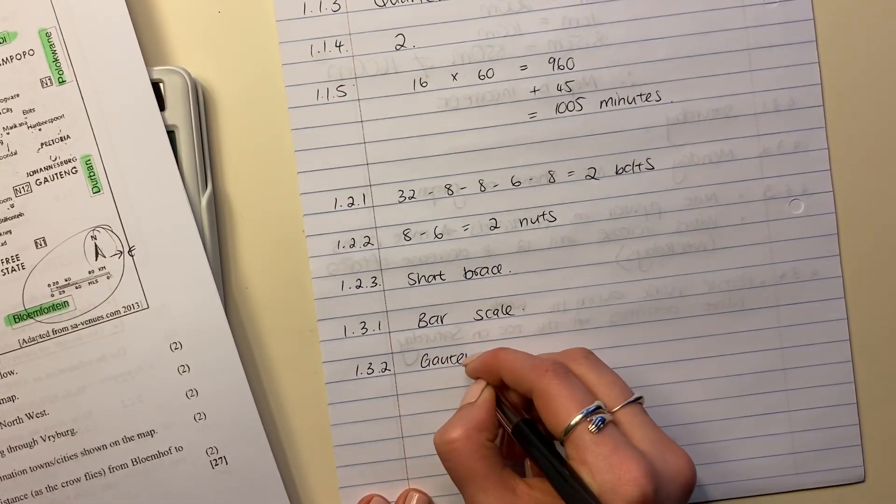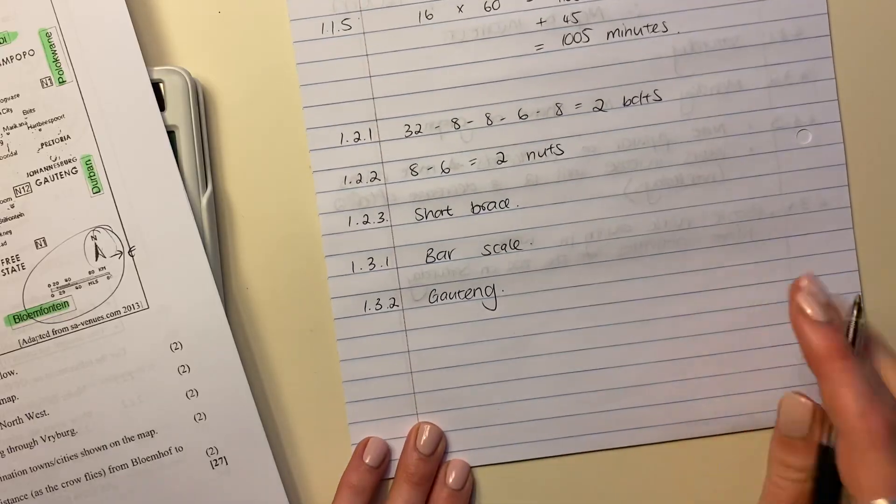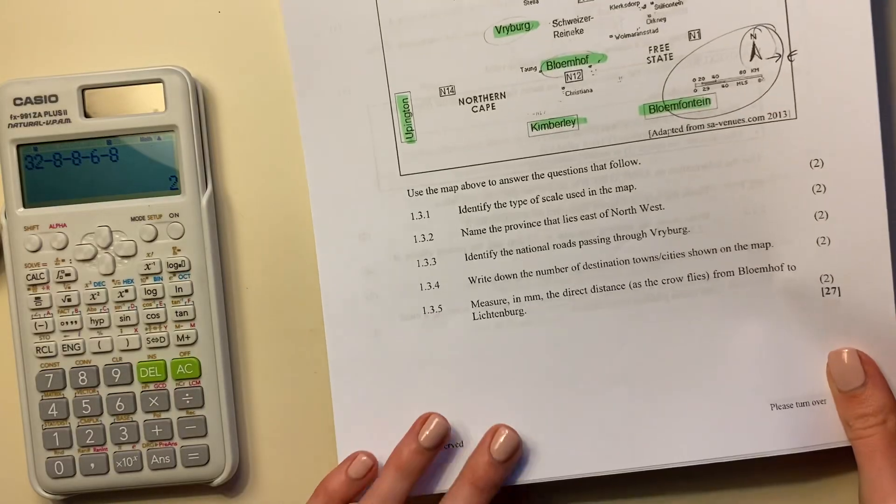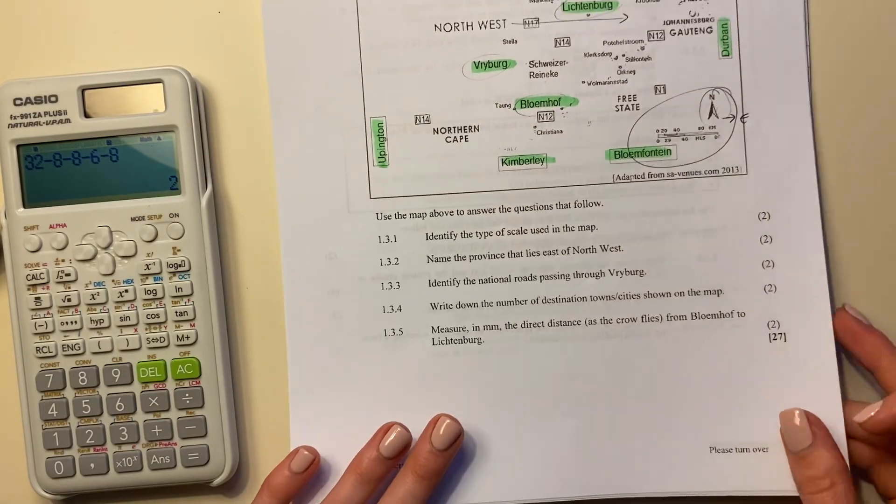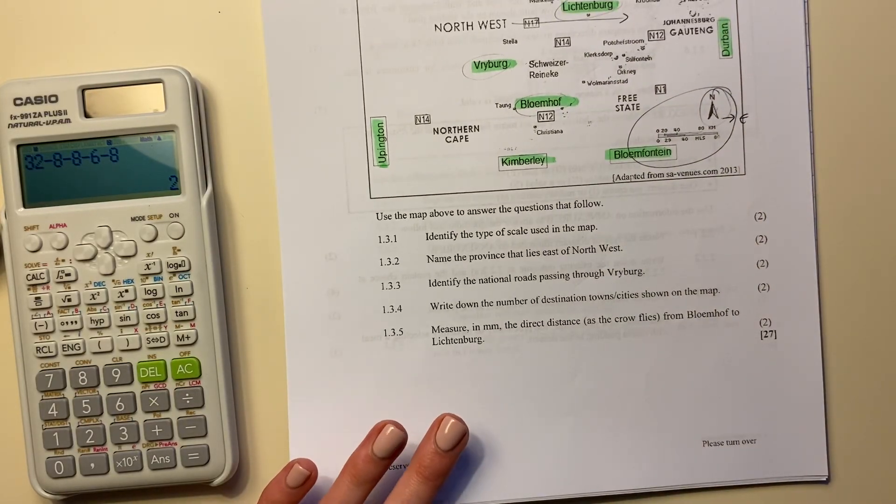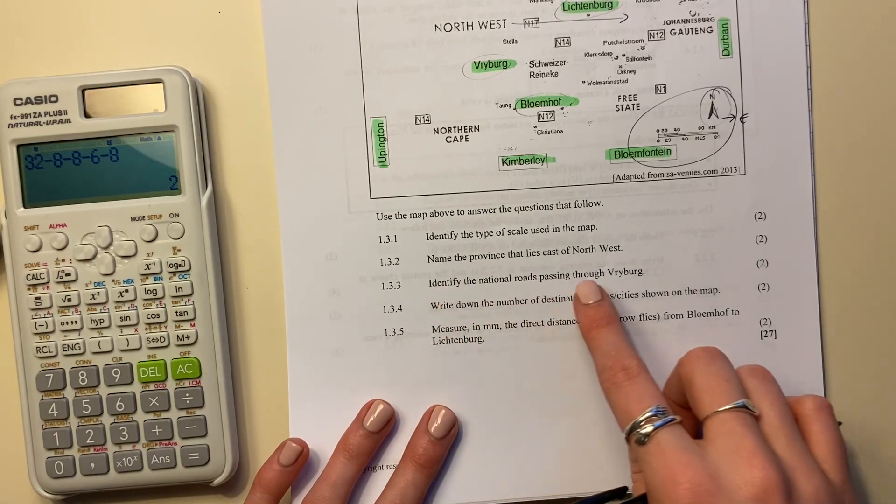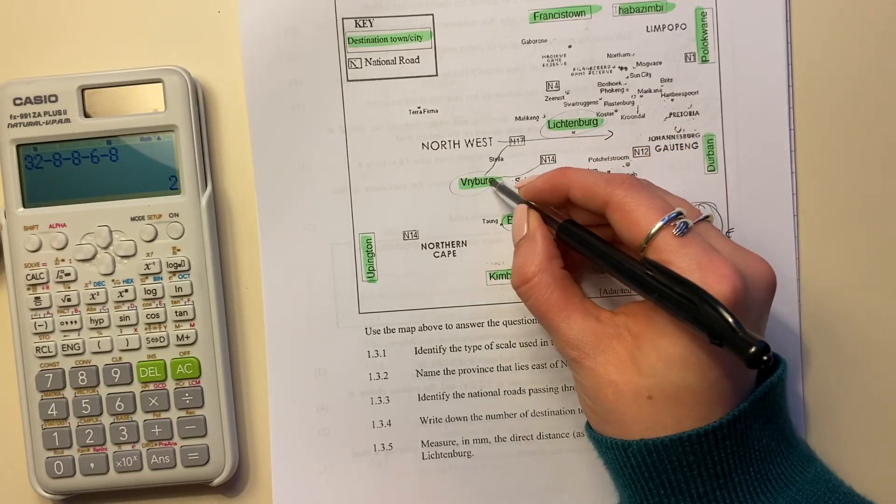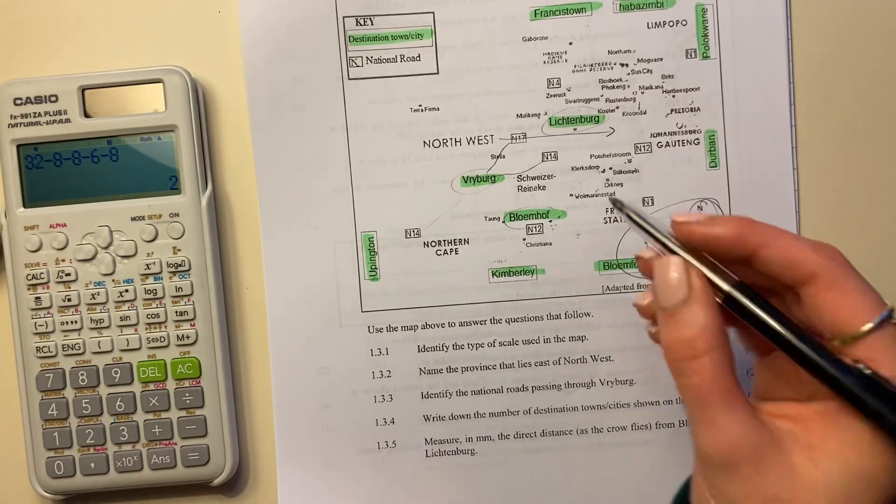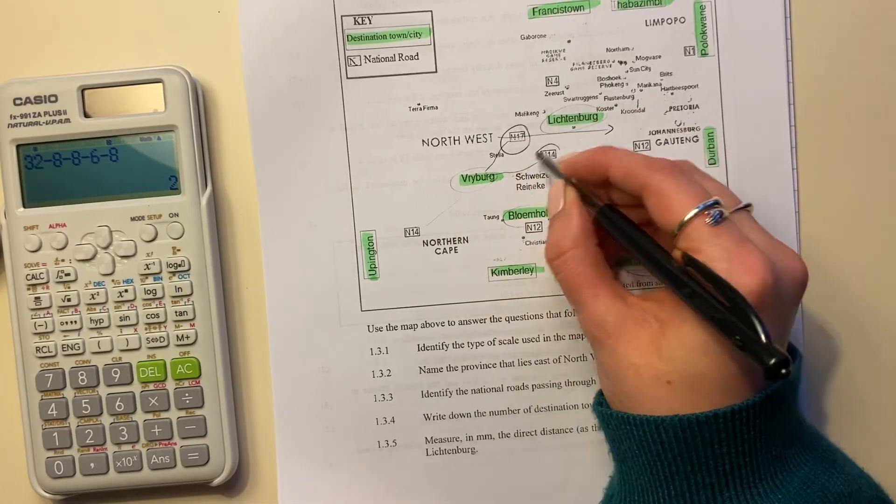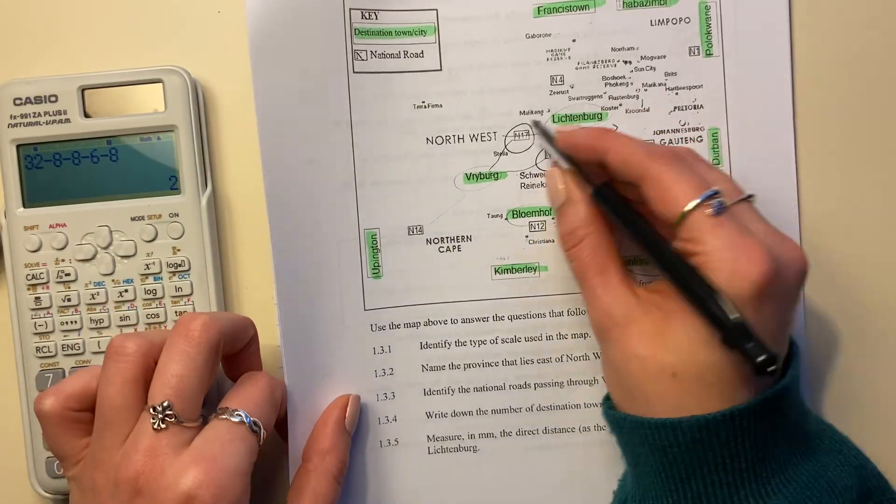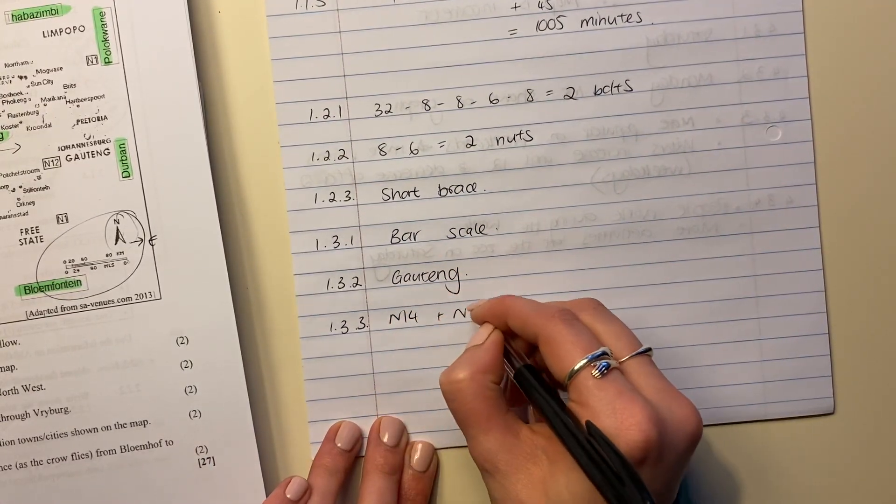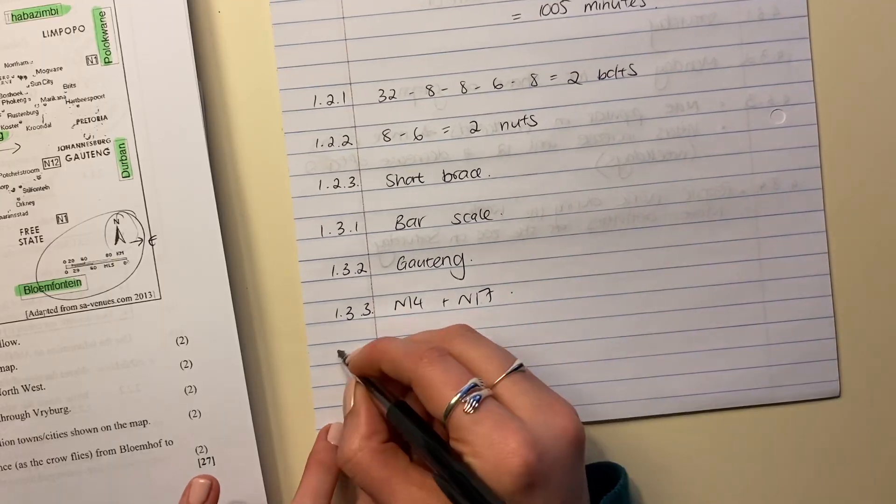Obviously, when you get your paper, guys, you will be getting paper that is in color and will be much better printed than my nasty printer. So don't stress if you can't see much on this map, Mags, but that's okay. 1.3.3: Identify the national roads passing through Freiburg. So you can't see it here, but this is kind of how it goes and then it goes down there. So the two national roads are N17 and N14. That's your answer. Obviously, the clarity will be a bit better when you do it. But N14 and N17, and that is us done.